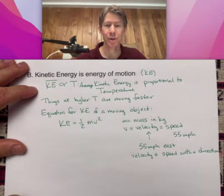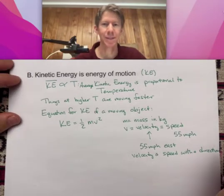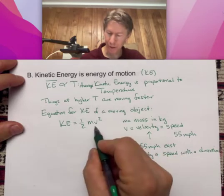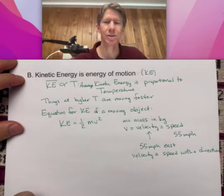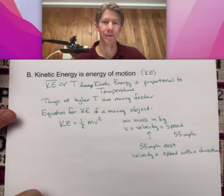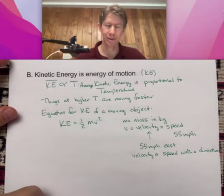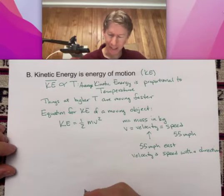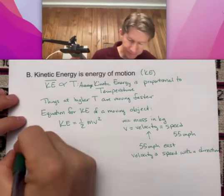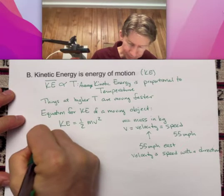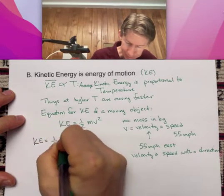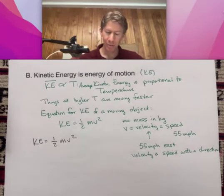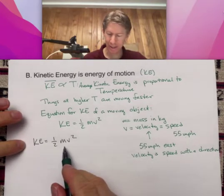Because velocity is speed with a direction. But the direction part doesn't matter for us. Because when we do the calculation, we're just going to do it with the number part. The direction doesn't enter into it. All right. So now let's go ahead and use this equation. And we won't worry about where the half comes from.